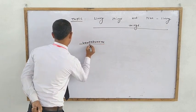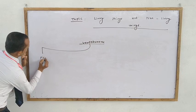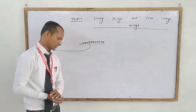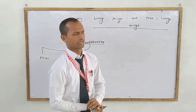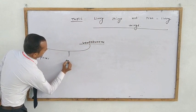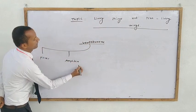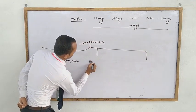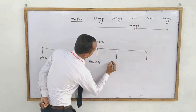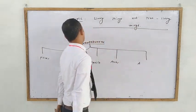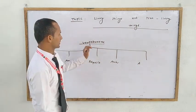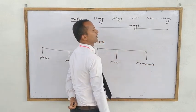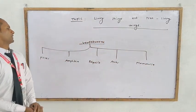The first group of vertebrates is Pisces, which means all animals that are fishes, generally found in water, and their body is covered with scales. The next group is amphibians. After that comes reptiles, then aves (birds), and the last and most advanced group among vertebrates is mammals.